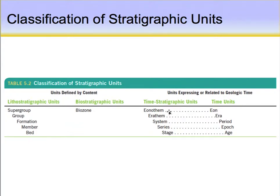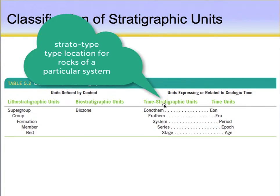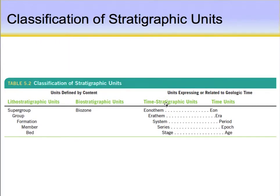Originally these systems were rock units that were the stratotype — the type location — for that particular system. For example, the stratotype for the Devonian system is in Devonshire in England, and for the Cambrian it is in South Wales. Now we recognize the Cambrian as occurring everywhere, so we just call it the Cambrian period, and any rock units that fall within that Cambrian period would be part of that system as well. Mostly we use the time units and don't use the older terms much anymore.